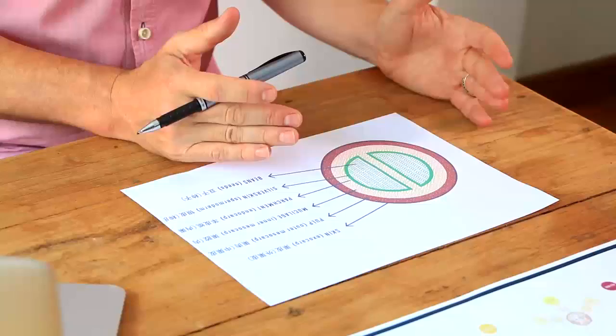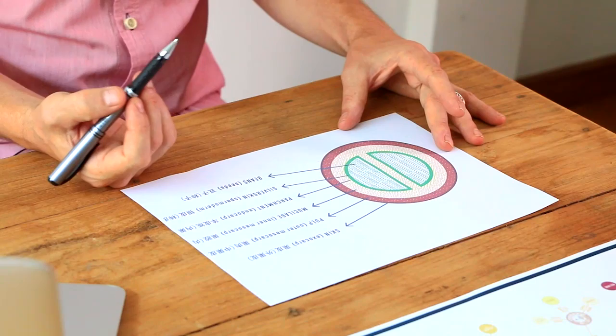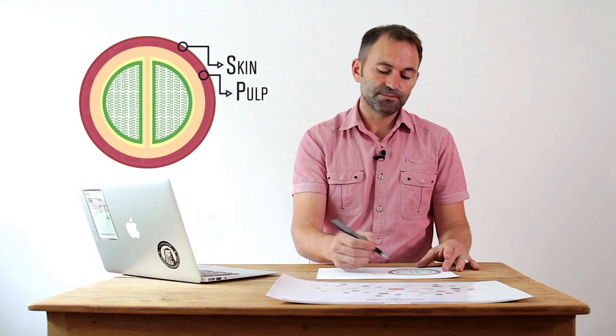Before I talk about different coffee processes, I want to quickly review the anatomy of a coffee cherry. This is a sketch of a coffee cherry. We have skin on the outside, we have the pulp or the fruity part of the cherry, and then we have the mucilage.